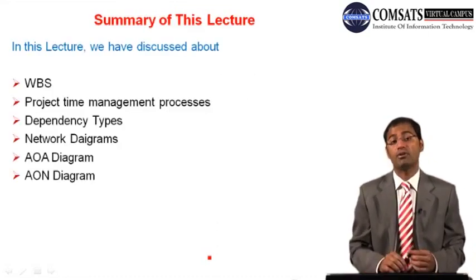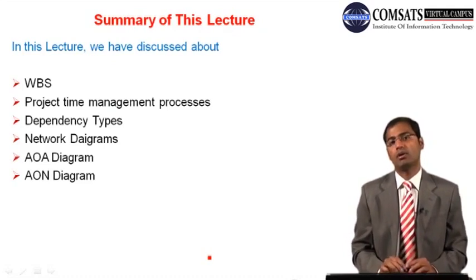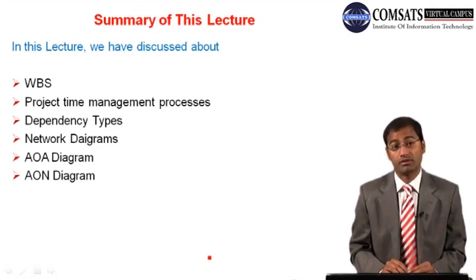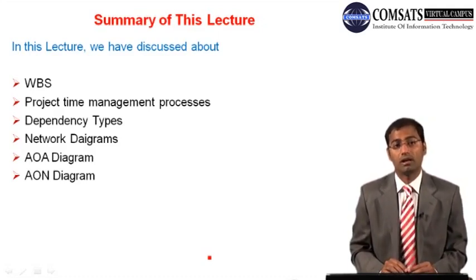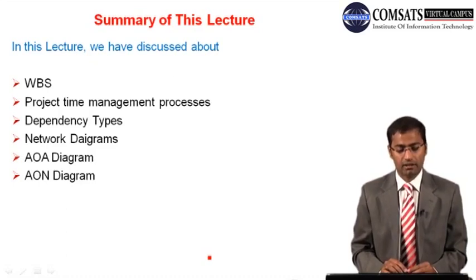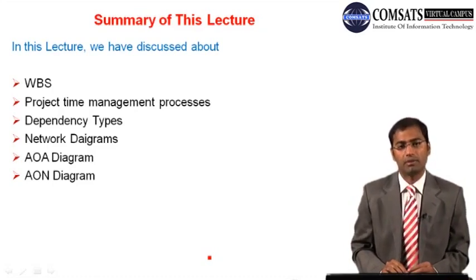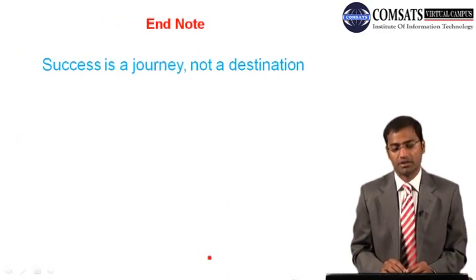In summary: we reviewed WBS usage for time management and discussed all seven processes of project time management, focusing on the third process — sequence activities. We discussed relationship types: Finish-to-Start, Finish-to-Finish, Start-to-Start, and Start-to-Finish. Then we covered network diagrams, working through both the Arrow Diagramming Method (activity on arrow) and the Precedence Diagramming Method (activity on node). Success is a journey, not a destination. Thank you, good luck, and wassalam.